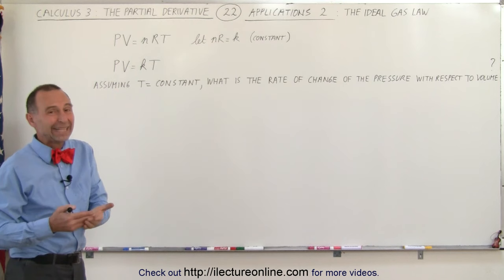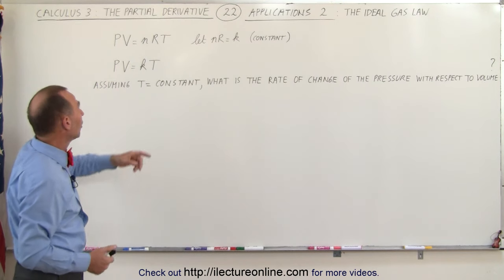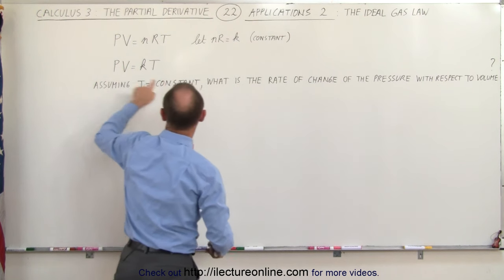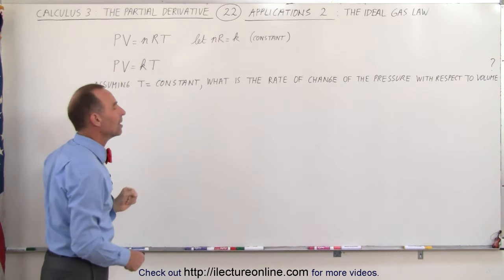So let's assume that N, the number of moles, stays constant. So we're going to let N times R simply be K, a constant. And we rewrite the equation PV equals K times T.